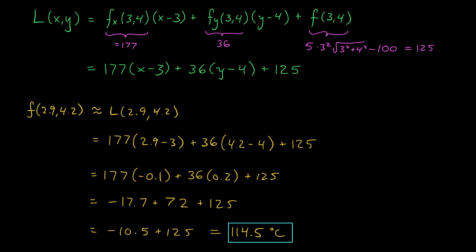It's a hot pizza! You might be wondering: how good is this estimate really? How close is it to the true temperature at (2.9, 4.2)? Well, if you check the value of the function at this point using a calculator, you'll see that it's very close to 114.62 degrees Celsius. So using our method, which didn't require a calculator at all, we got to within 0.2 degrees Celsius of the true temperature. Pretty incredible! Finally, if you're wondering what toppings are on this pizza — it's pepperoni and pineapple. Lots and lots of pineapple.